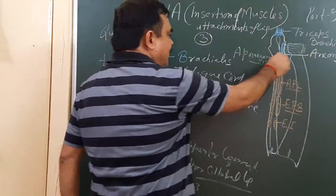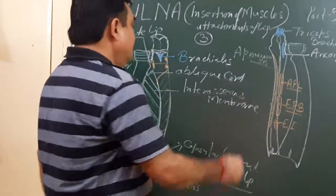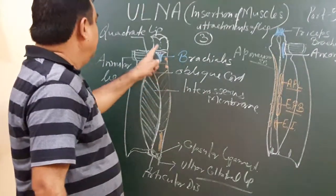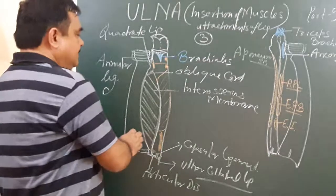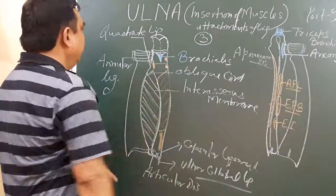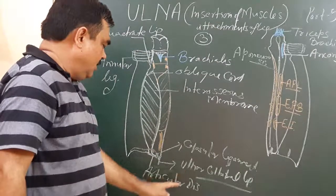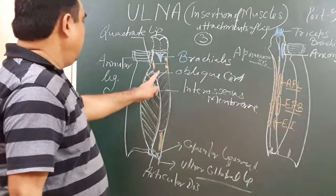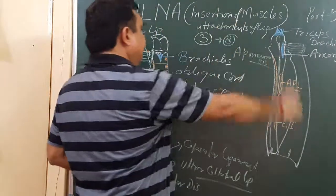On the posterior border here is the aponeurosis. This aponeurosis gives attachment to three muscles, as we have seen in the previous lecture. So in total, there are eight membranous structures — aponeurosis and ligaments — attached to this ulna: one is the quadrate ligament, and counting through, two, three, four, five, six, seven, and eight.